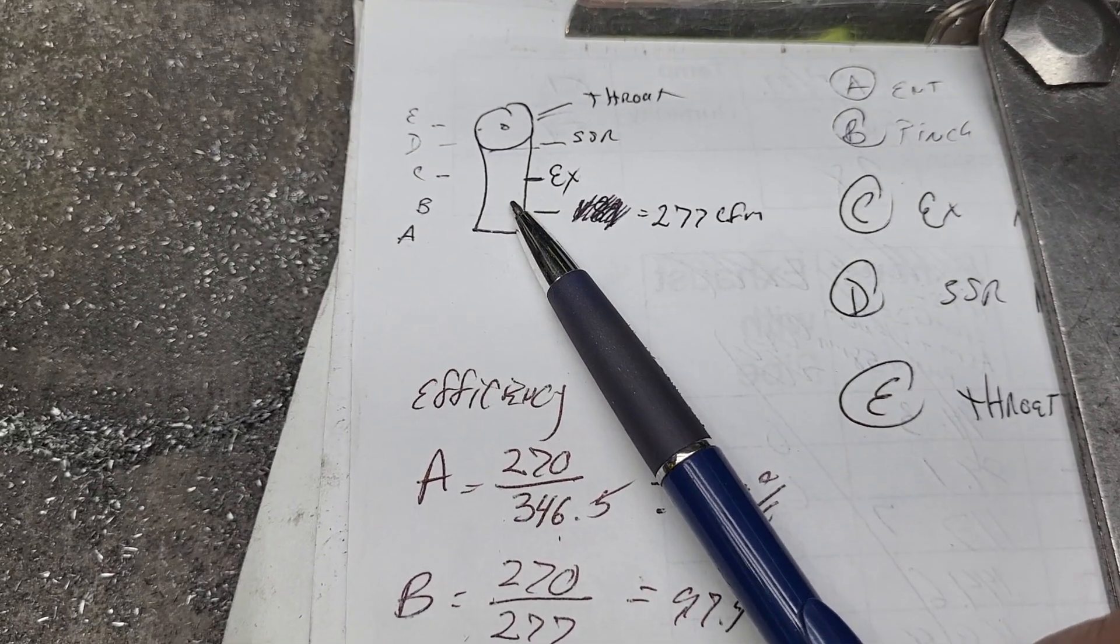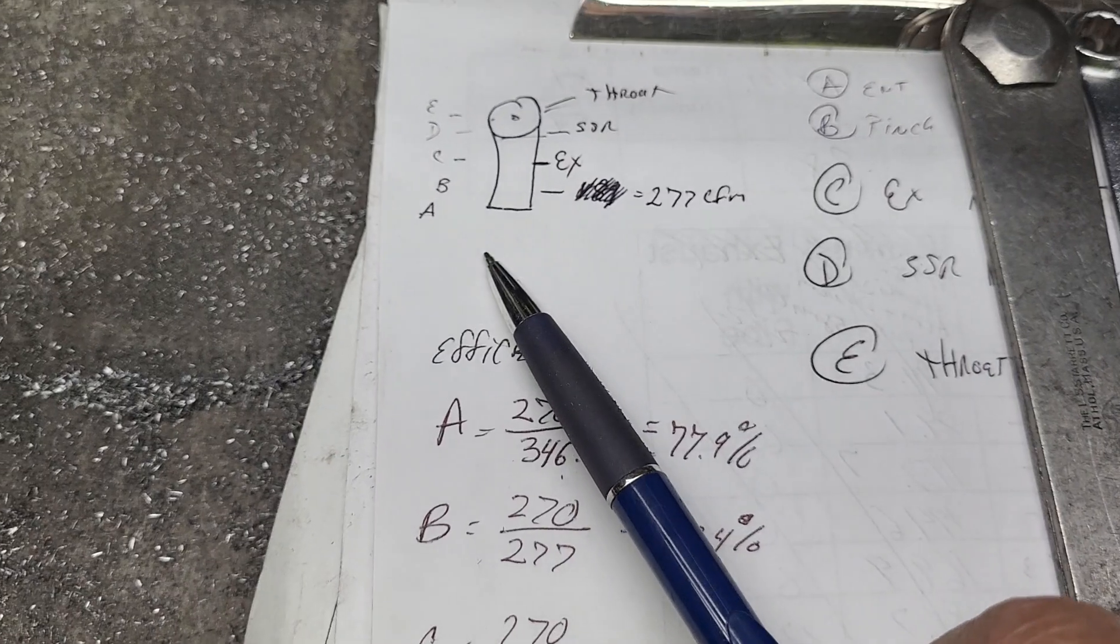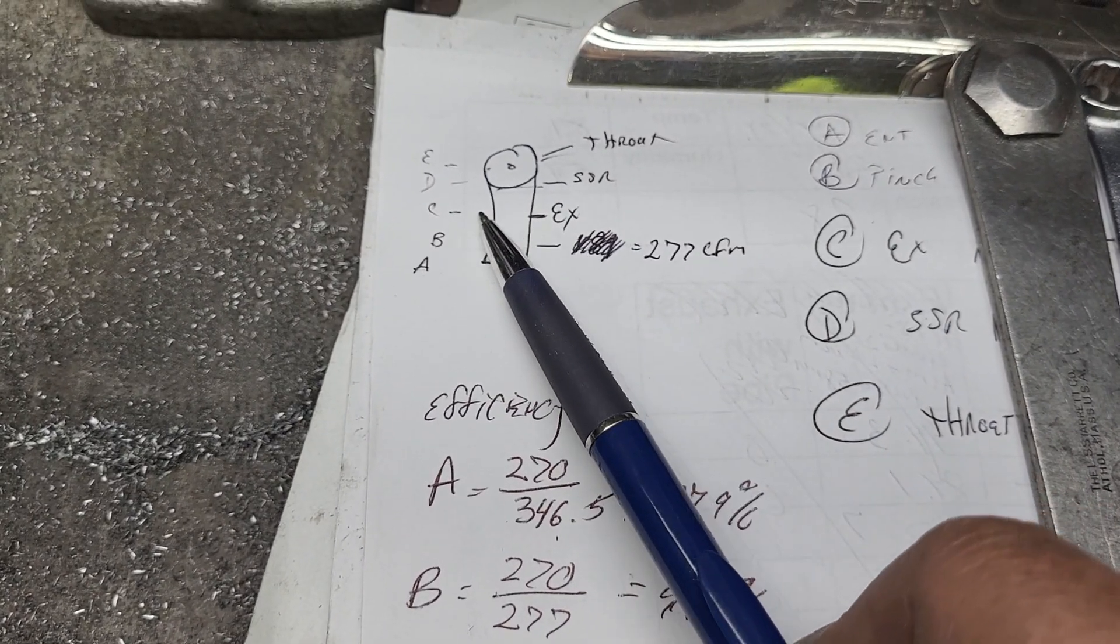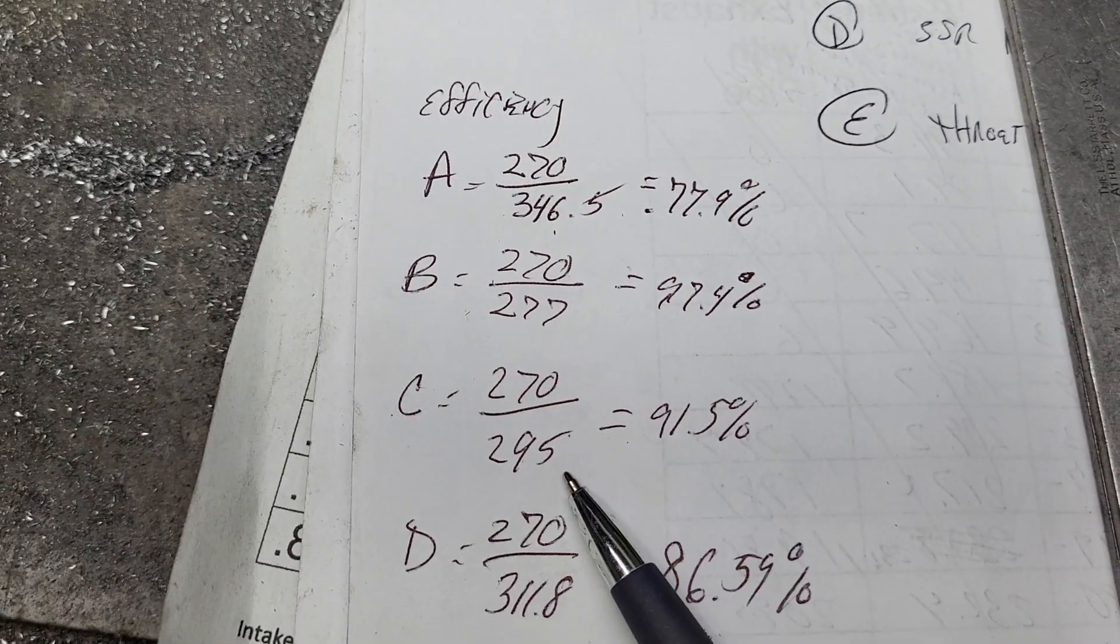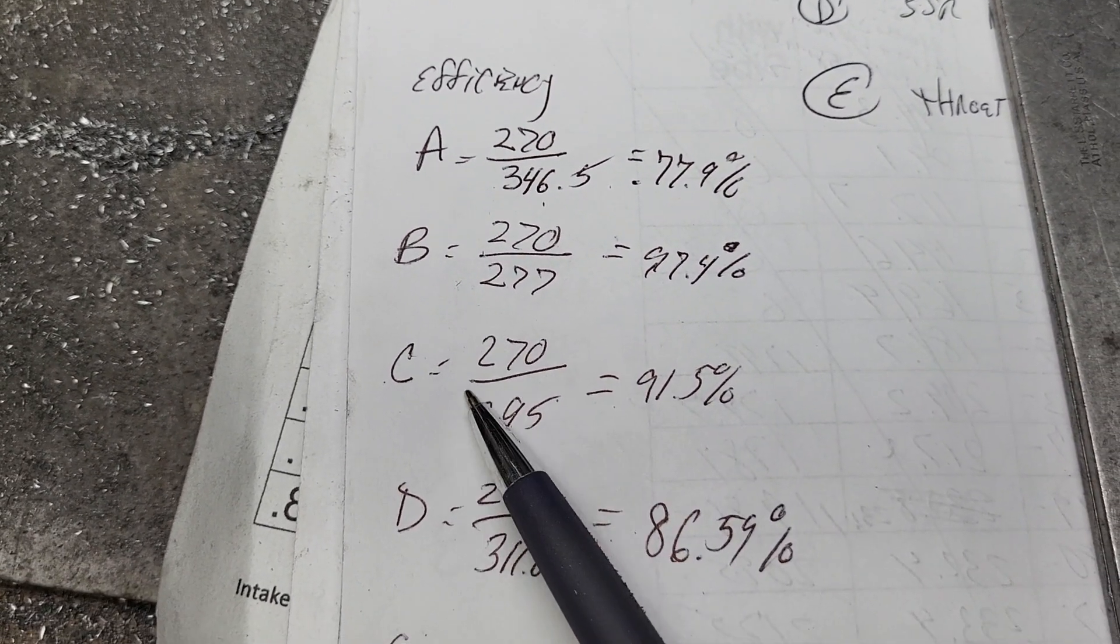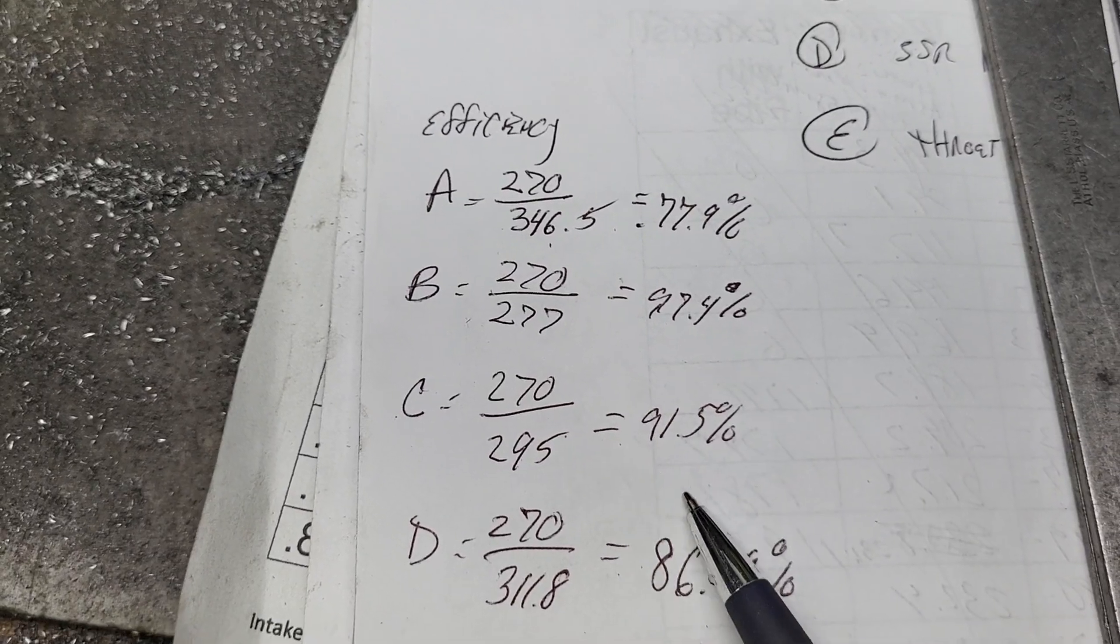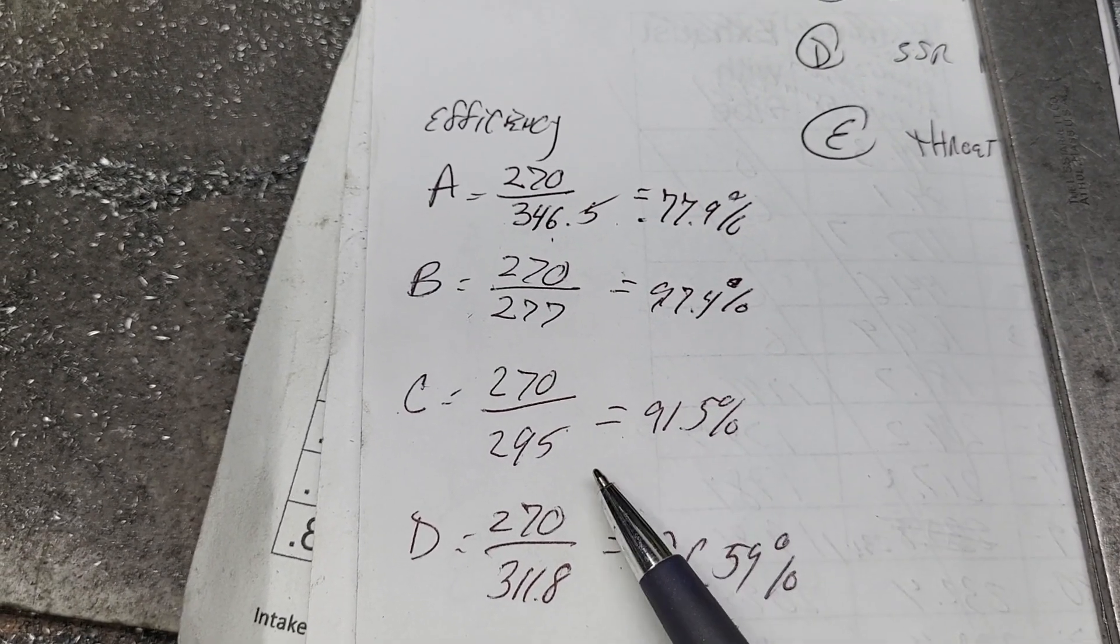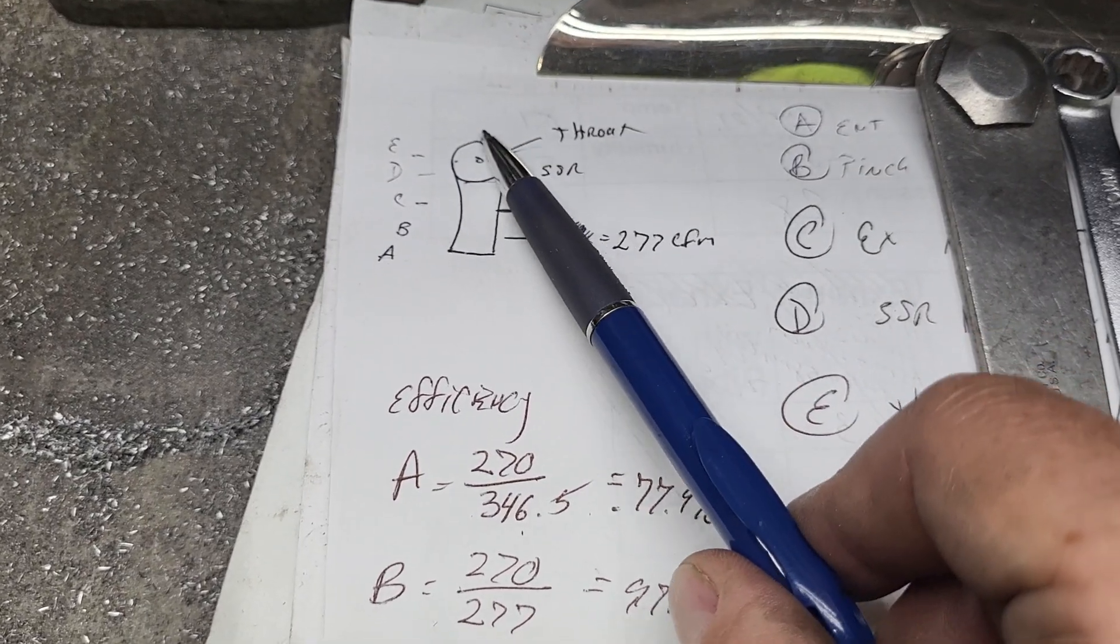Let's move down to C - right in the middle of the port where it starts to expand out. So we have more area, it should flow 295, but we're still stuck at 270 so our efficiency goes down. Makes sense, right?